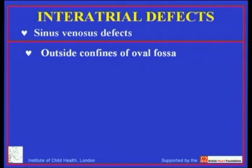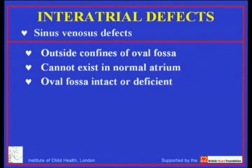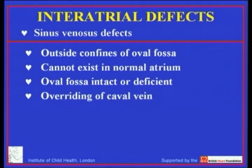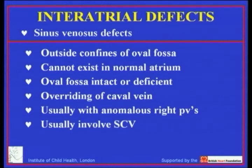Much more interesting are these other defects which are outside the confines of the oval fossa. The essence of these defects — both the sinus venosus and the coronary sinus defect — is that they cannot exist in the normal heart. So something has happened during development that has distorted the entirety of atrial septal formation. The essence of the sinus venosus defect is that the oval fossa itself either has to be intact or deficient, but the rims of the oval fossa have to be formed. The phenotypic feature is overriding of a caval vein associated with anomalous connection of the right pulmonary veins. Andrew will show you specimens to show that it is the anomalous connection of the right pulmonary veins that is the real key.